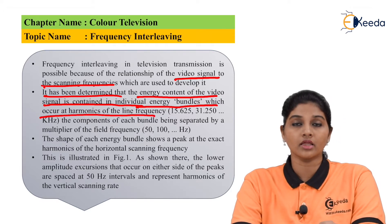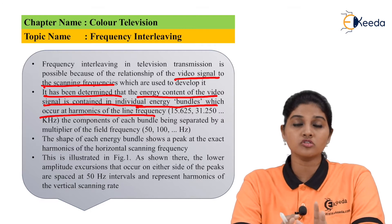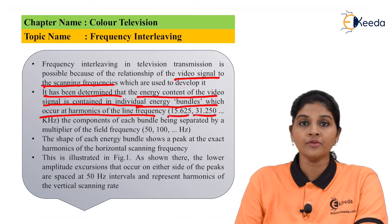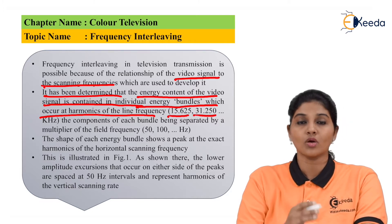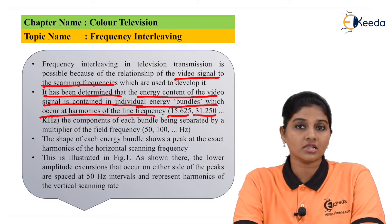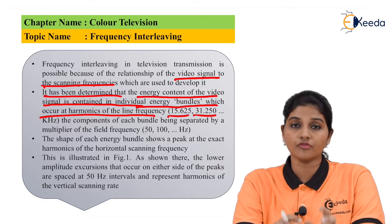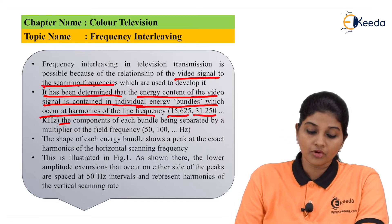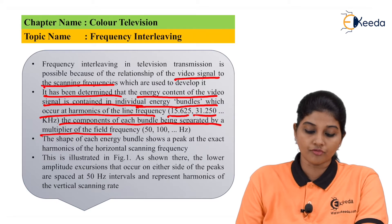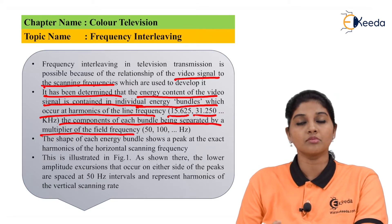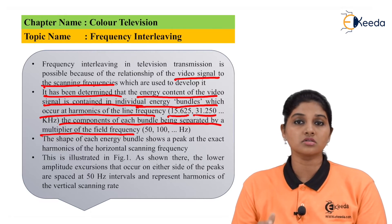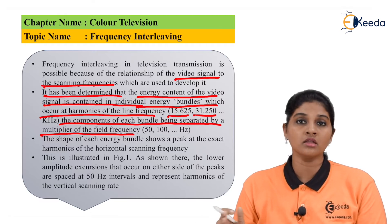This indicates that the energy of the video is present in the form of bundles at the harmonic, having a line frequency of 15.625 kHz or 13.250 kHz. The components of each bundle are separated by a multiplier of the field frequency — that means these bundles are separated at intervals of 50 Hz, 100 Hz, 150 Hz, and so on.